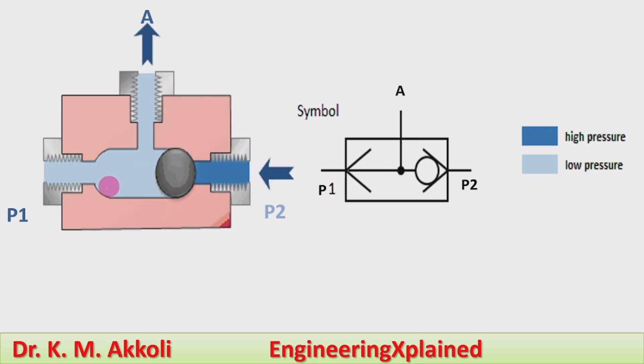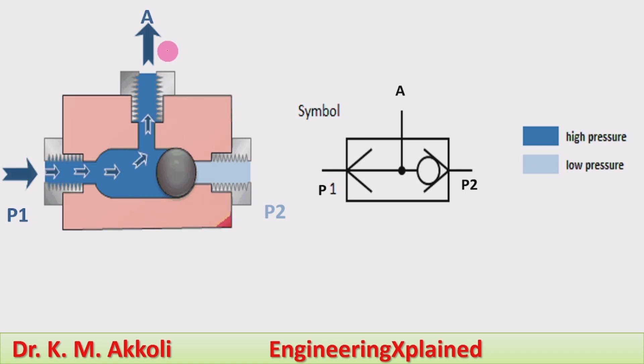Like this, alternately, from the two sources, one source will be connecting to the actuator. That is a shuttle valve.